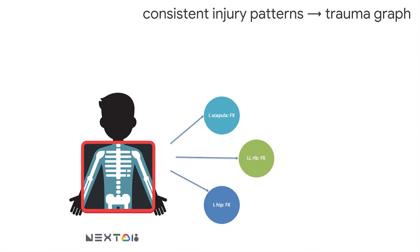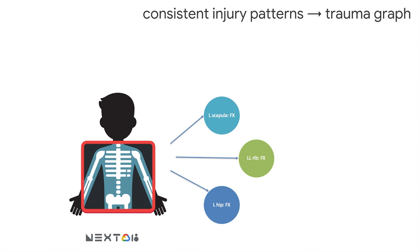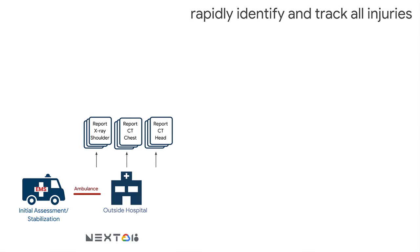Let's take a patient who's had a fall. Patients sustain multiple injuries — say a scapular injury, a rib fracture, and a left hip fracture. Trauma surgeons know there's an association between injury patterns. For example, based on where the rib fracture is, it's associated with injury to the chest or abdomen. A patient with a left lower rib fracture in this injury set has a 17% chance of having a splenic laceration. Over millions of radiographs and trauma registry data, we can build a trauma graph that maps the relationship between all injuries and potential injuries a patient may have.